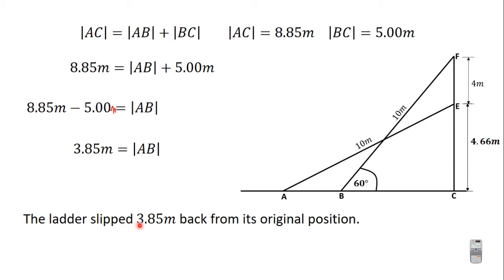The ladder slipped 3.85 meters back from its original position. From the diagram we can see that at the top the ladder slipped 4.85 meters, but at the foot of the ladder it slipped back 3.85 meters. Using the Pythagorean theorem and trig ratios, we have found the distance the ladder slipped back on the ground.